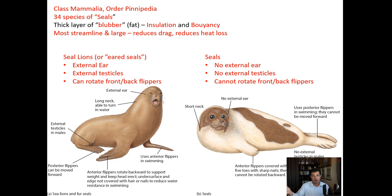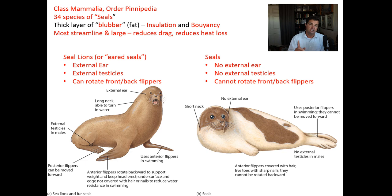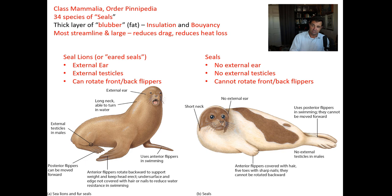We can divide the group into sea lions — also called eared seals — and seals. Sea lions typically have an external ear, external testicles, and can rotate their front and back flippers, which allows them to walk on land. Seals, on the other hand, have no external ear, no external testicles, and cannot rotate their flippers, so they have much more difficulty walking on land.